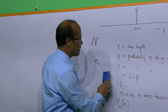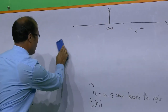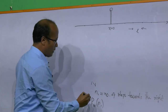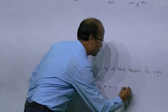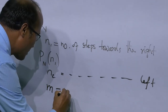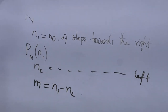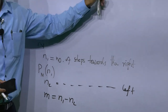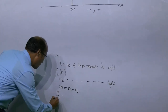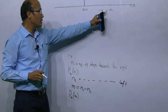So let us find out what this probability is. If N2 is the number of steps towards the left, then M is defined as N1 minus N2, which gives the net displacement of the man from the lamppost in units of the step length. So we want to find out what is the probability that after taking N steps, he will be at a net displacement M.